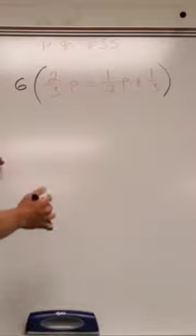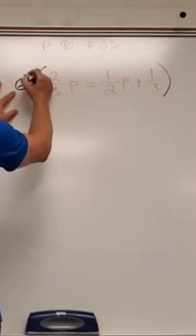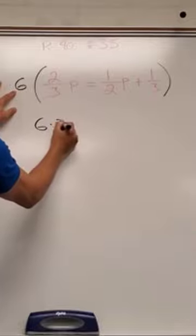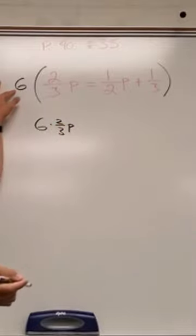I'll do it individually here so you can see what's going on. 6 times 2/3 p. I'm just going to write that out. 6 times 2/3 p equals